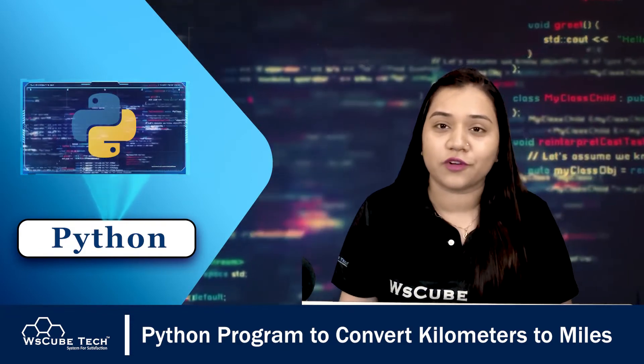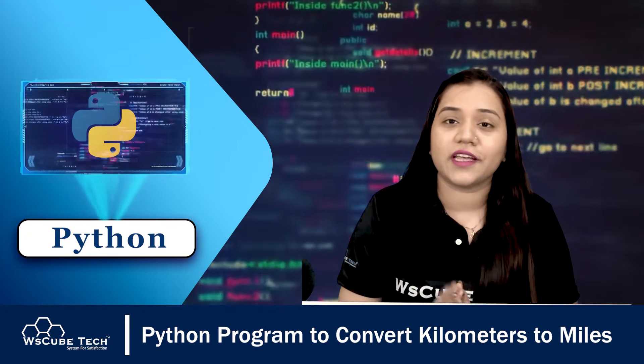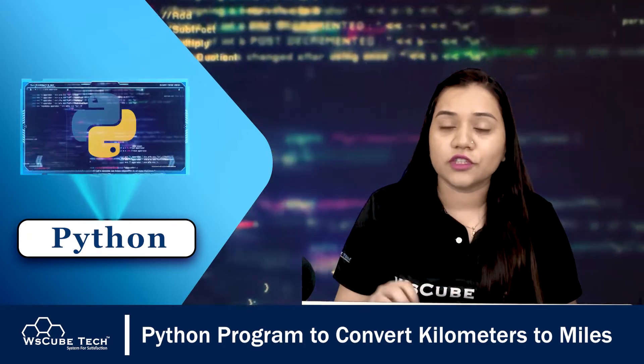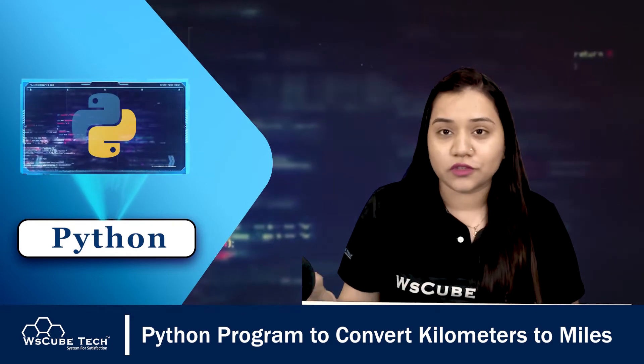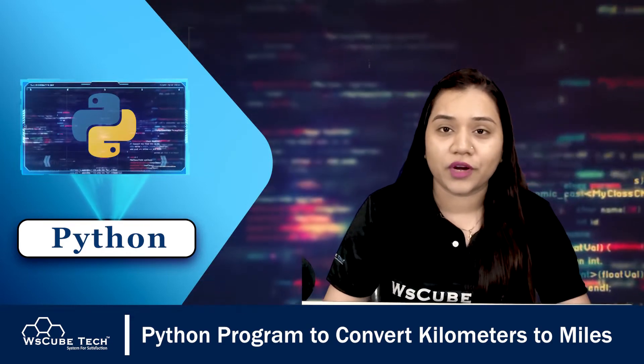We know how to convert kilometers to miles, but we will be writing a Python program to do this. To convert kilometers to miles, we have a very simple formula. In one kilometer we have 0.621371 miles. Using this formula, we will be converting kilometers to miles. Let's have a look at this formula and then we will move ahead with the Python program.